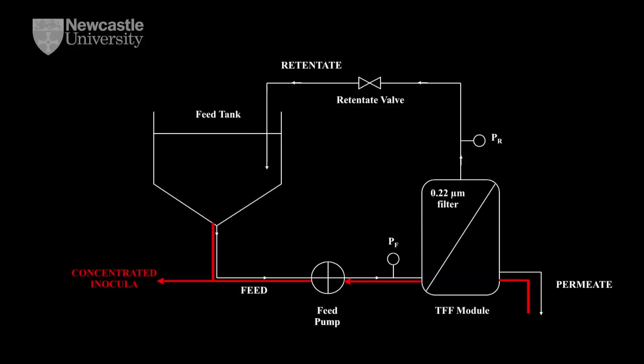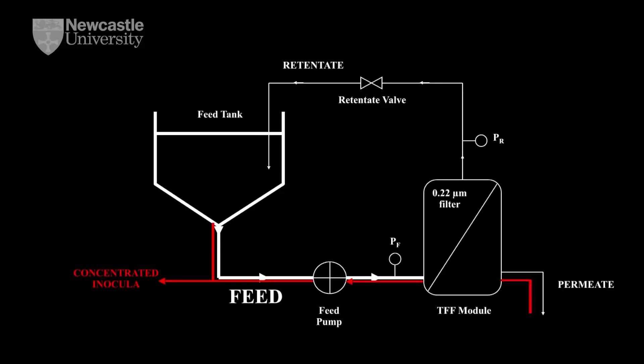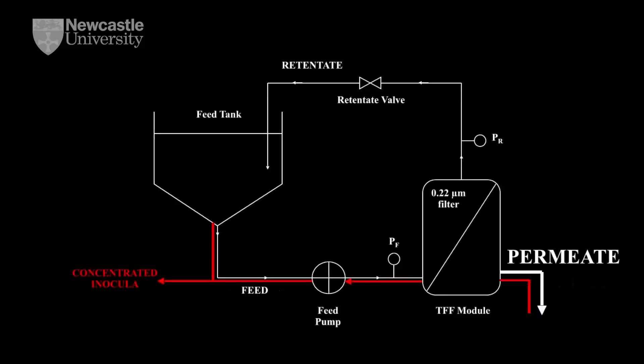In this method, the feed flows tangentially across the surface of the filter at a positive pressure relative to the permeate or filtrate side of the filter. This pressure differential encourages filtration of a proportion of the sample which is termed the permeate. The remainder of the sample is retained on the feed side of the membrane as retentate.